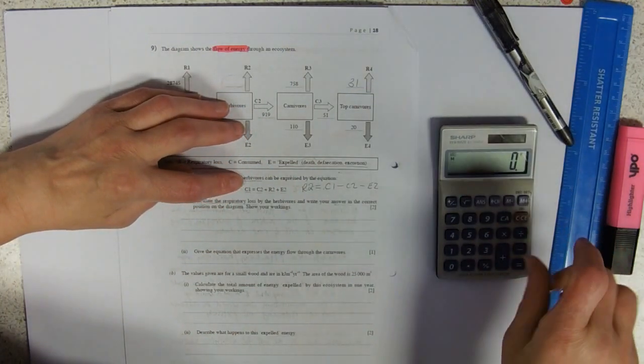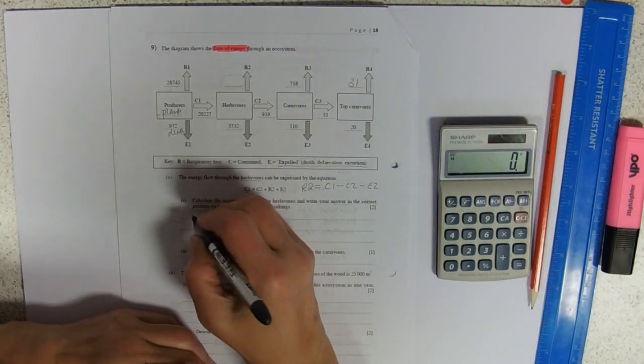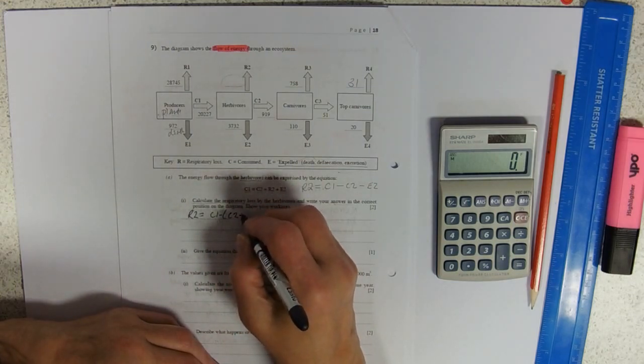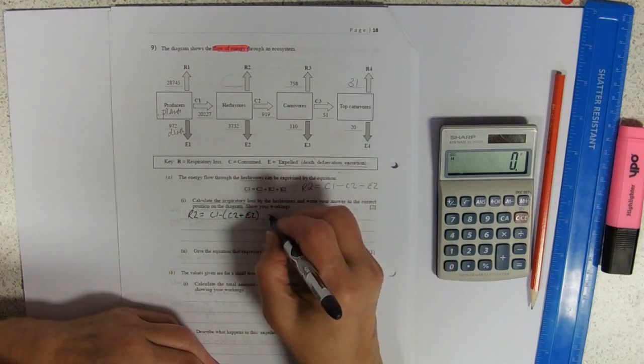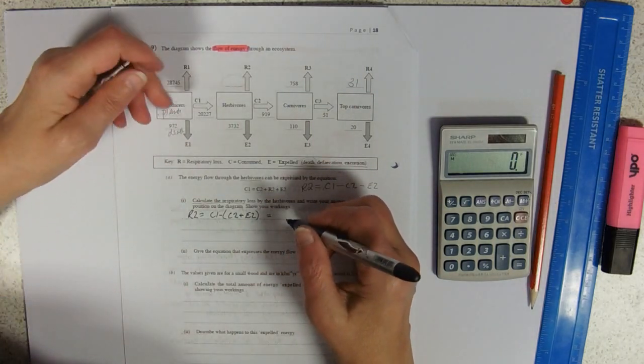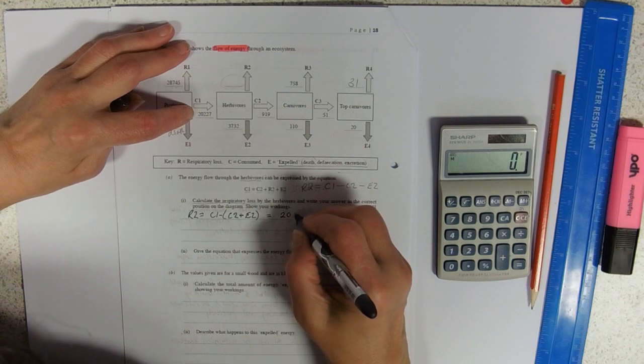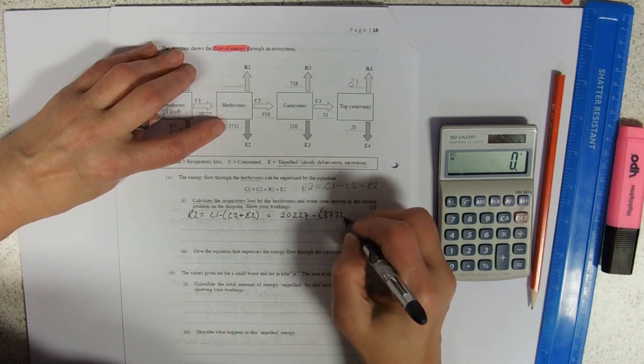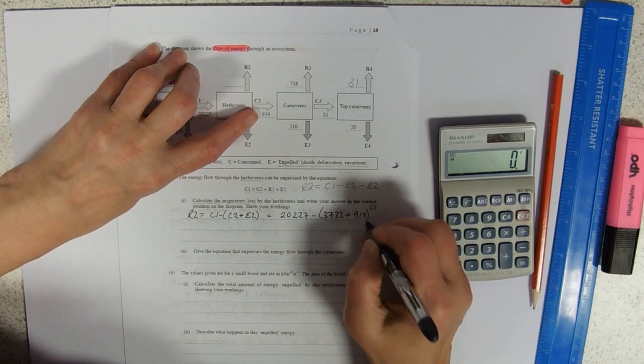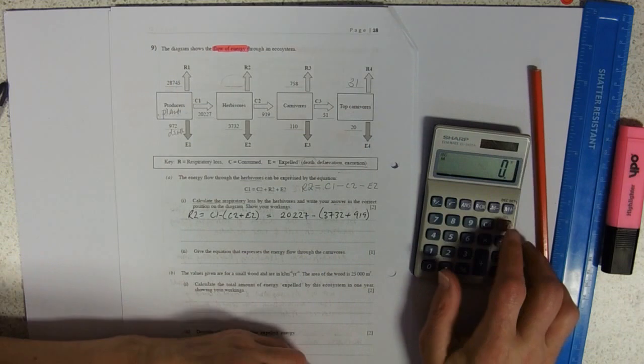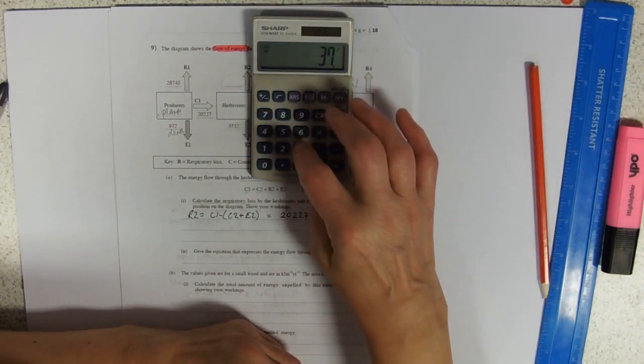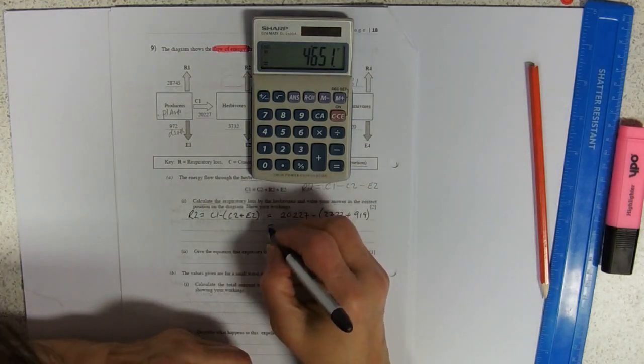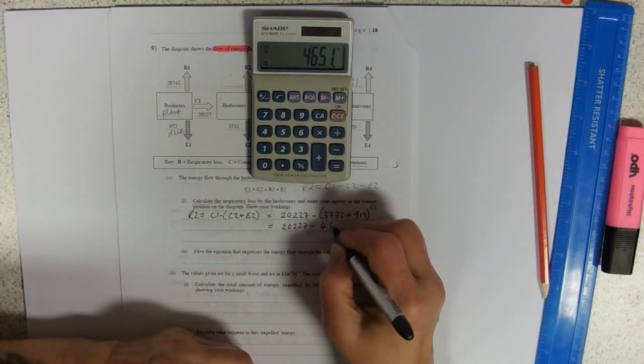So show your workings. Okay, R2 equals C1—I'm going to add those together—take away C2 plus E2. So that equals... C1 is 20,227, so I'm going to substitute in now minus brackets 3,732 plus 919. So I'm going to add those together first: 3,732 plus 919. So that equals 20,227 take away 4,651.